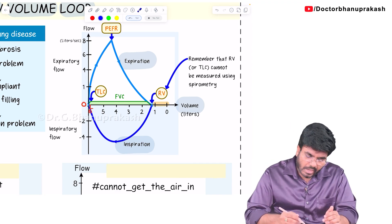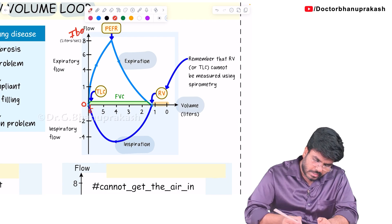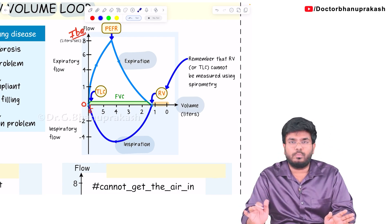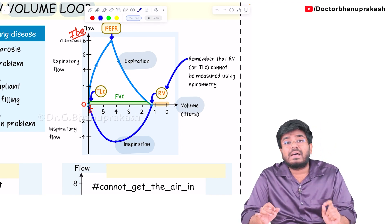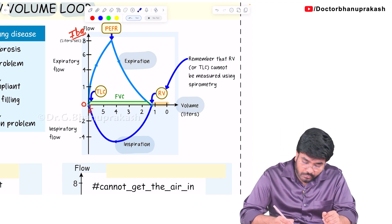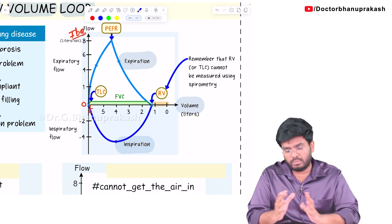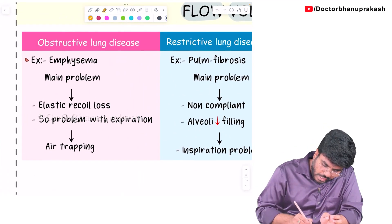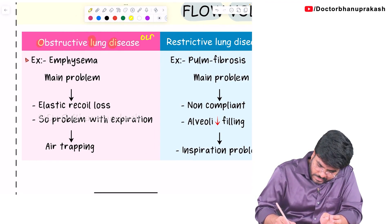So how is the question going to come? It will be an image-based question. Most of the time they won't ask about the normal flow volume loop — they will ask about the diseases. How does this flow volume loop change in obstructive lung diseases and restrictive lung diseases? For that you need a basic understanding of obstructive lung disease, which we can write in short form as OLD.